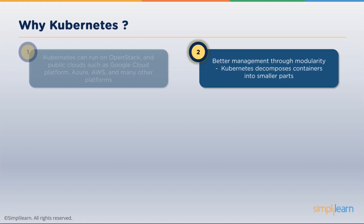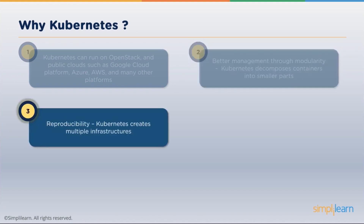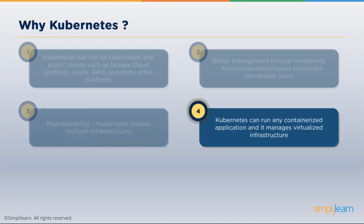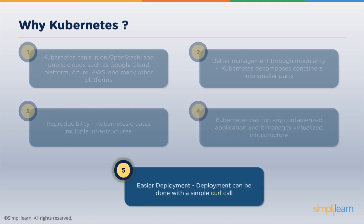Once you break containers into smaller parts, it becomes much more efficient for an administrator to manage that entire environment. The reproducibility of Kubernetes is extremely high. You can build out infrastructures very quickly, with containers coming on and off, being killed and created to help load balance your entire environment. Kubernetes is all about managing your applications through containers in a virtualized infrastructure, and it's really easy to deploy solutions — you just use a simple curl call to push out your Kubernetes infrastructure.